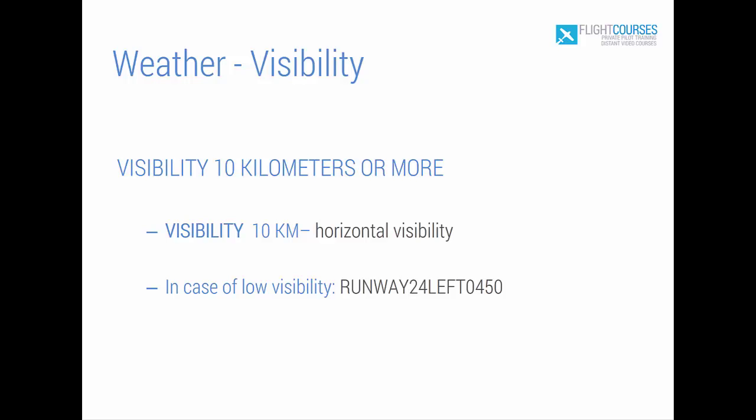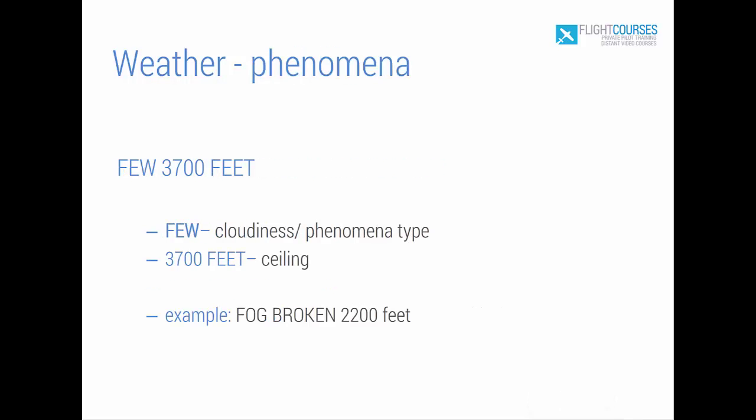Let's move to the visibility description. In our example, visibility is very good. This visibility means horizontal visibility from the point of view of an observer placed on the airport. In case of low visibility — less than 1,500 meters — visibility is given as runway visual range in meters. In this example, runway 24 Left is the runway being referenced when describing horizontal visibility.